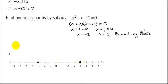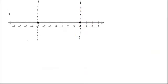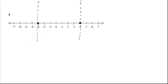So what this does is this divides the number line into three regions. The region on the left, the region in between the two boundary points, and the region on the right. And once I've figured out the three intervals, all I have to do is test each region.